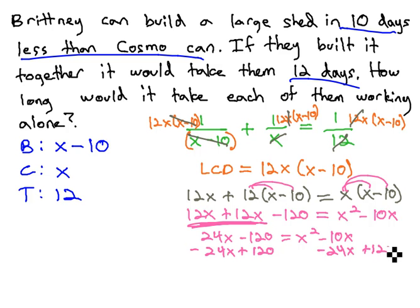Subtract 24x and add 120. It's going to give us zero equals x squared minus 34x plus 120.